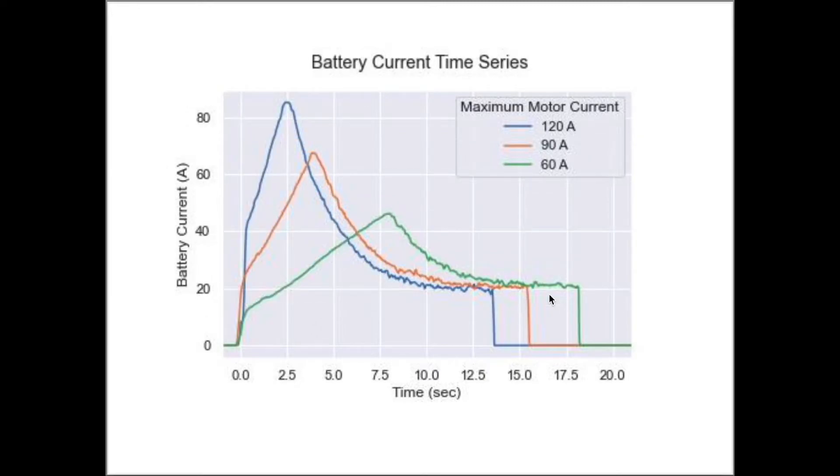The battery current time series graph also matches our expectations. As the vehicle accelerates, the battery current increases up to the same RPM limit we saw in the motor current graph, and then falls and levels off.